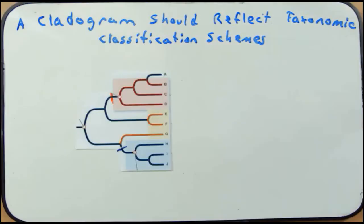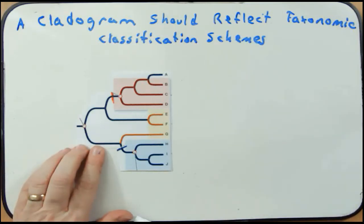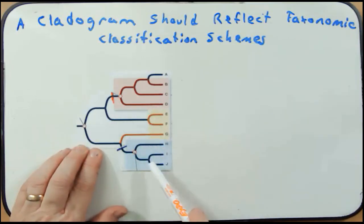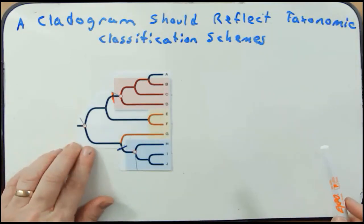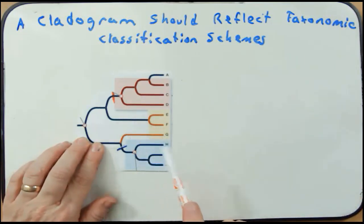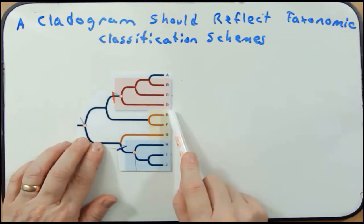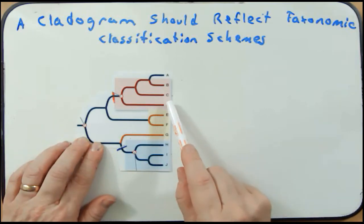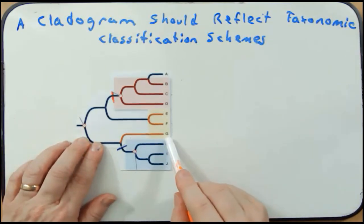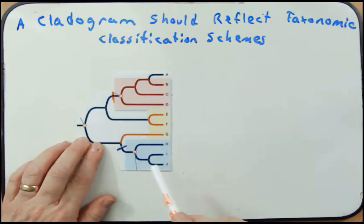On the previous whiteboard, I showed a figure where the classification matched the phylogenetic groupings — we called those monophyletic groups. However, that's not always the case. In this new figure, we have a phylogenetic tree with a taxonomic classification scheme laid over it. The red group represents a classification shared by taxa B, C, and D. Taxa E, F, and G, shown in yellow, have a different characteristic. Blue represents yet another characteristic.